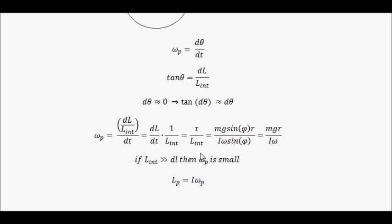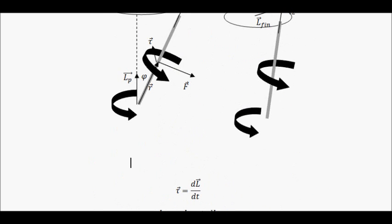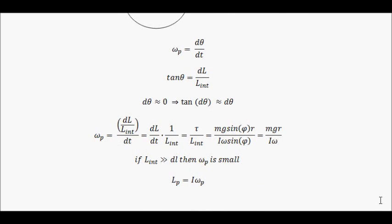However, if dL is comparable in size to Lint, so if this thing here is getting quite big, which comes out of the result when a top loses energy, it starts to wobble. This is because of this LP we're talking about. Because the LP, as the precession speed starts to speed up because it loses energy, this LP becomes significant. So this causes a vertical motion which is associated with this precession angular velocity here.